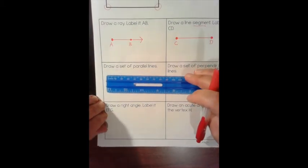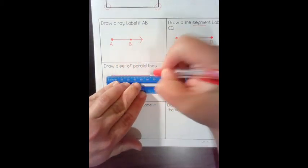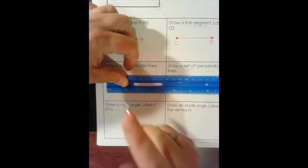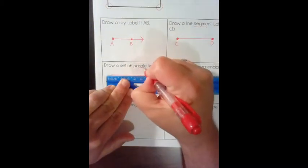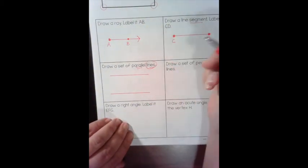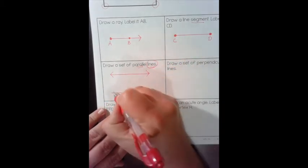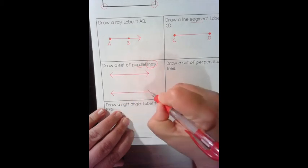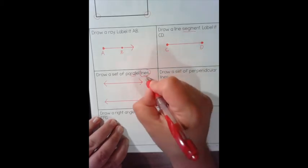Draw a set of parallel lines. My ruler is naturally parallel, so I do one line on one edge and another line on the other edge of the ruler. These lines will never intersect — that's the definition of parallel. Since it asks for lines, you've got to draw arrows to signify that they go on forever. If you don't put arrows, I have to mark it wrong. Lines have no end points — segments have end points. Lines go on forever.